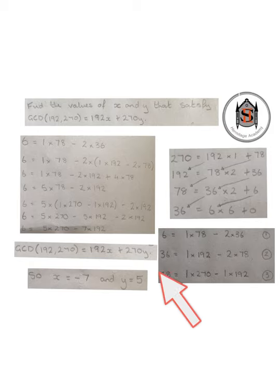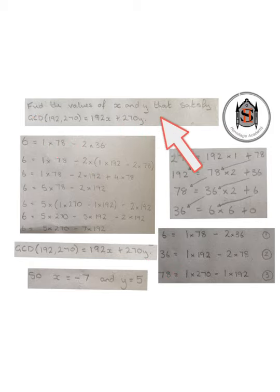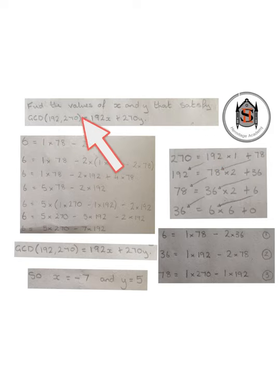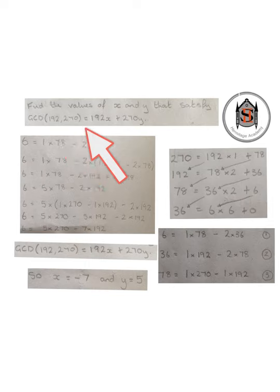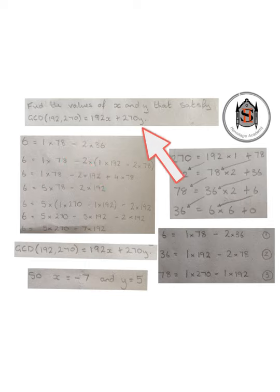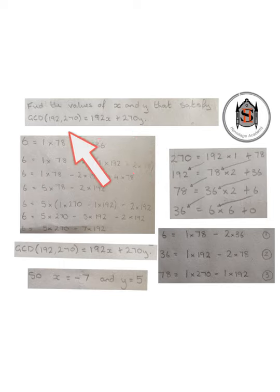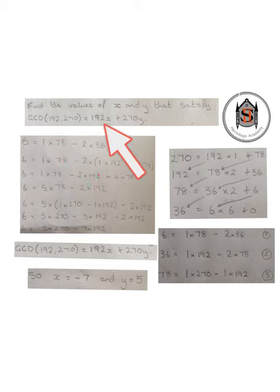In the second part of this question we want to find the values of x and y that satisfy the equation: the greatest common divisor between 192 and 270 is equal to 192x plus 270y. This means we want to find an equation in the form 6 — remember that's what we worked out in the last part — equals 192x plus 270y.